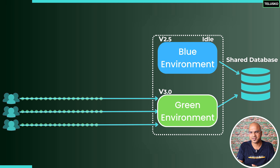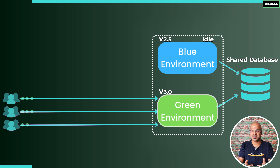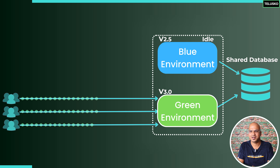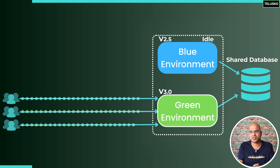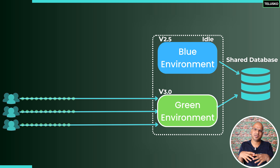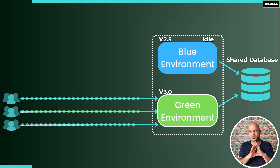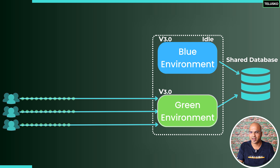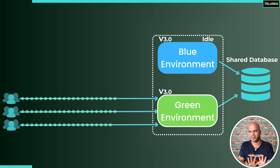What is the role of the blue instance now? It sits idle and can be used as a recovery server. If something goes wrong with the green server, you can just route all traffic back to blue. Once you're confident the green instance is running perfectly, you can also upgrade your blue instance to 3.0 — so it's there as a standby even though it's not currently in use.